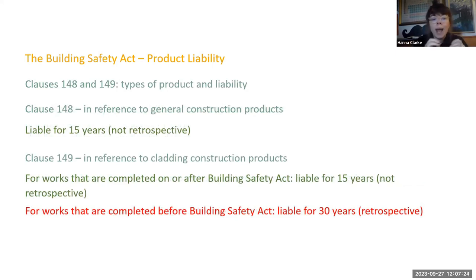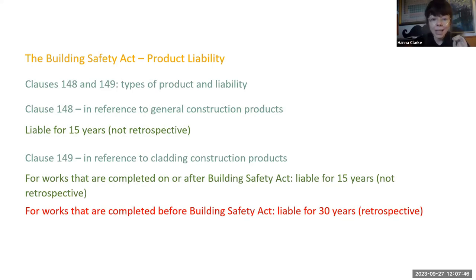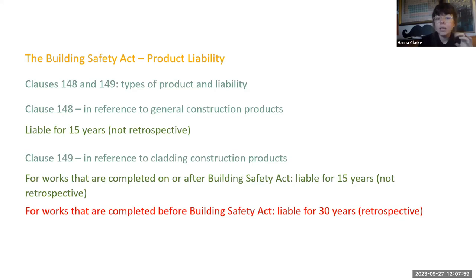The liability in clauses 148 and 149 is split between types of products. Clause 148 covers general construction products, and clause 149 covers cladding construction products. For general construction products, liability applies to any works completed on or after the Building Safety Act was laid, for 15 years. For cladding construction products, the same applies for works on or after the Act, but also for any works completed before the Act was laid — with a liability period of 30 years.